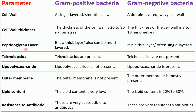The peptidoglycan layer is a thick layer and can also be multilayered for gram-positive bacteria, whereas for gram-negative bacteria this peptidoglycan layer is a thin layer and it is often single layered.